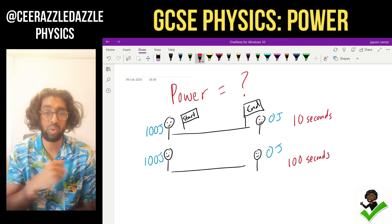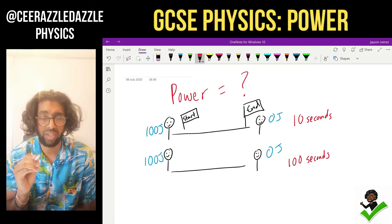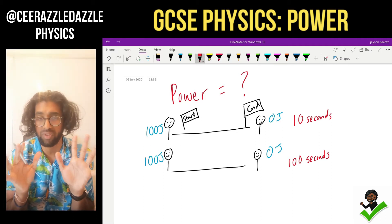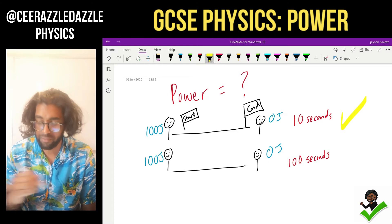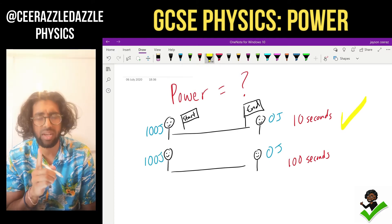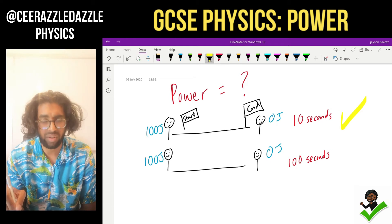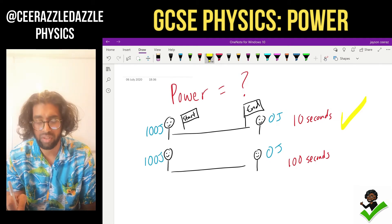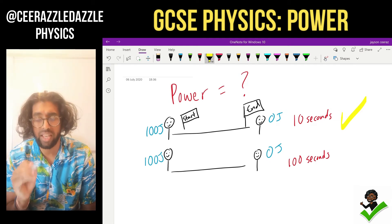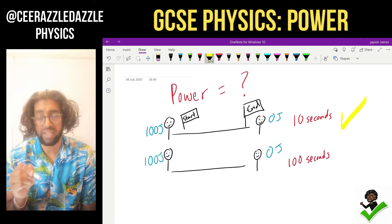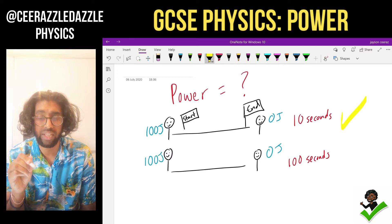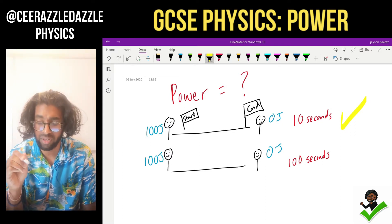Now here is the question. Which one do you think is the most powerful? Think about it. So the answer is the first one. Why is it the most powerful? Have a look. What did it do to the energy? It transferred the energy at the fastest rate. So the first one is the most powerful. The reason why? It transferred energy at the fastest rate.